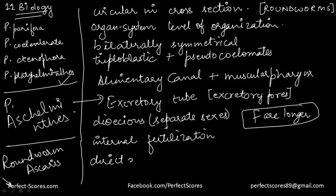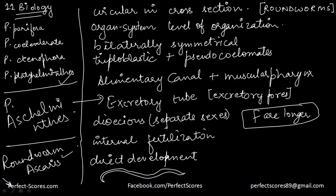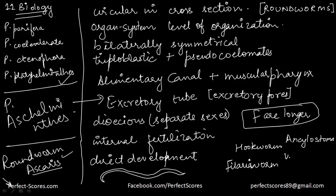Development can be direct or indirect. In direct development the young one looks exactly like the adult; in indirect there may be intermediate stages. Some examples are the common roundworm also known as Ascaris, the hookworm scientifically known as Ancylostoma, and the filaria worm scientifically known as Wuchereria.